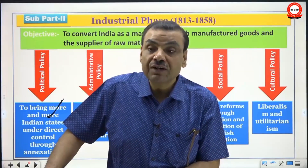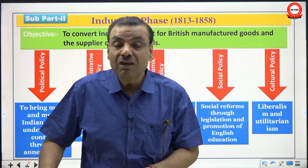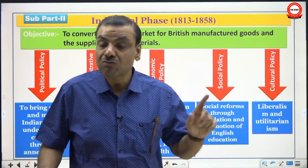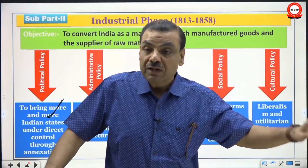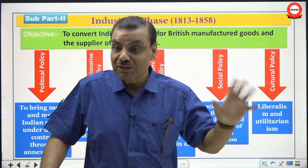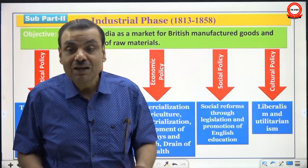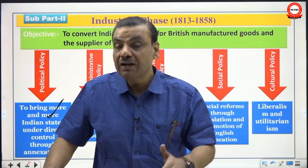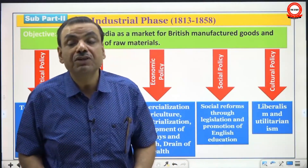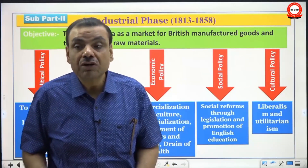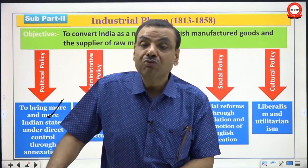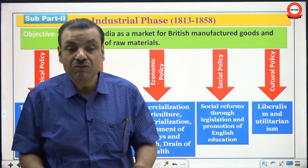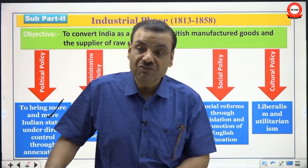In the previous classes, we have already discussed Lord Hastings and the major wars, then Amherst, then William Bentinck's annexations, then Auckland, then Ellenborough, and finally Hardinge and the Anglo-Sikh Wars. But before discussing the Anglo-Sikh Wars, it is necessary to become familiar with who the Sikhs were and what their specific structure was.